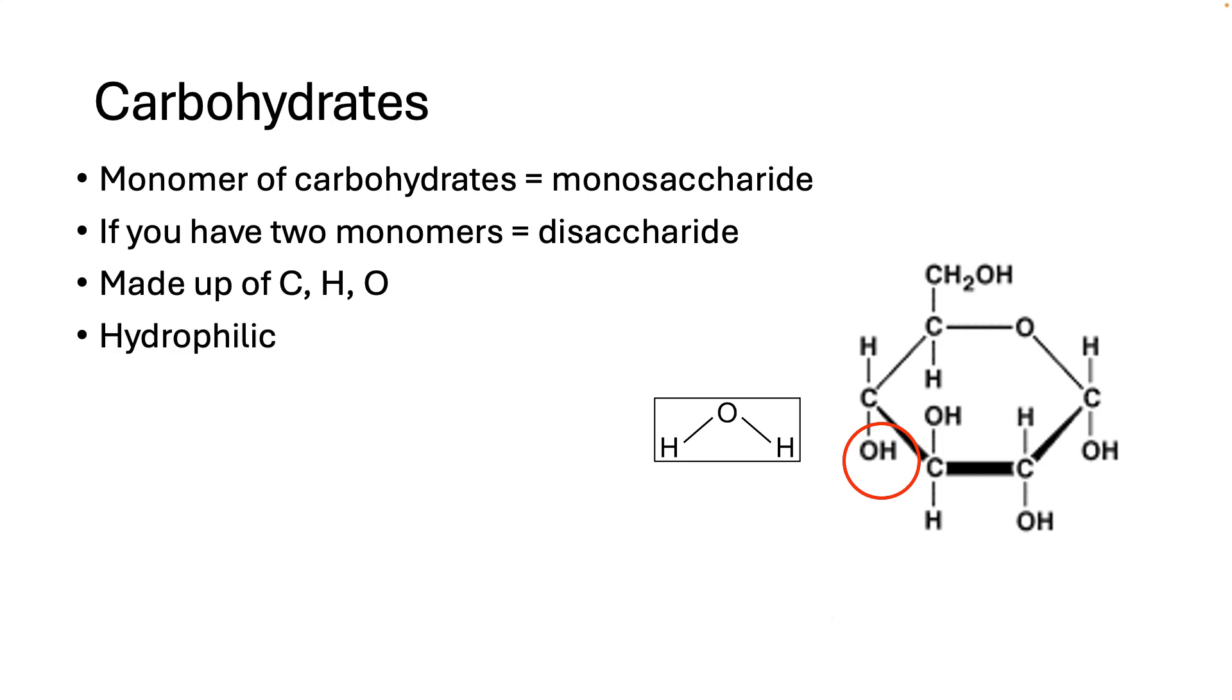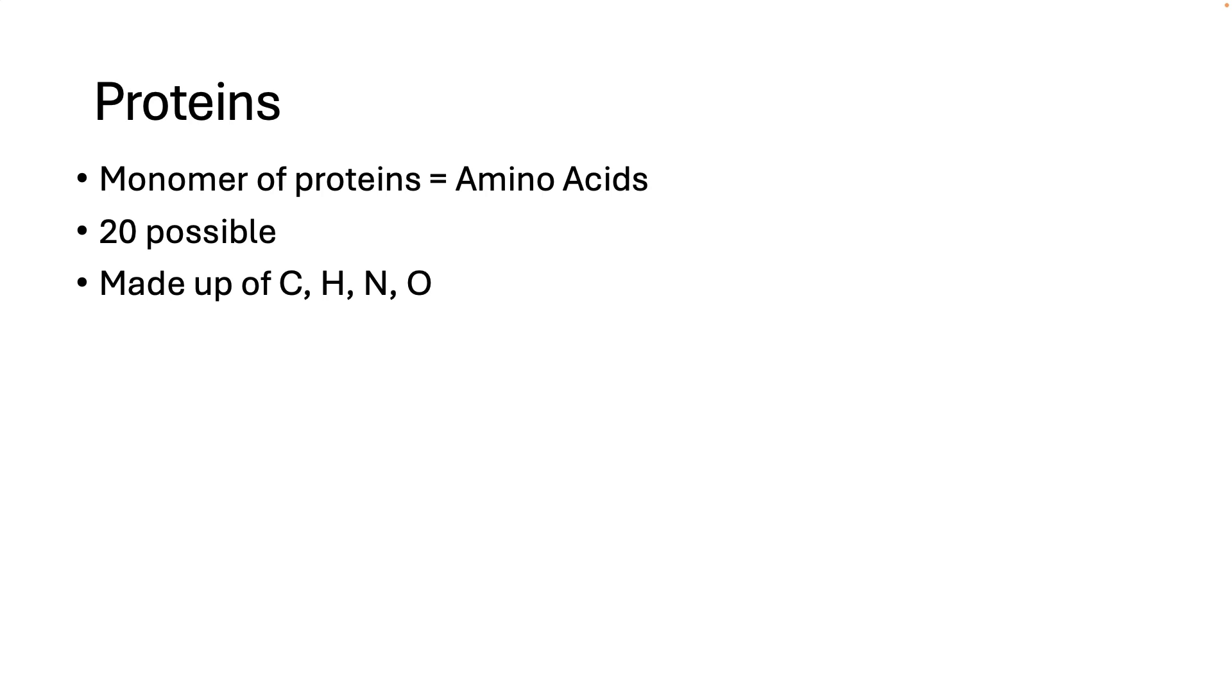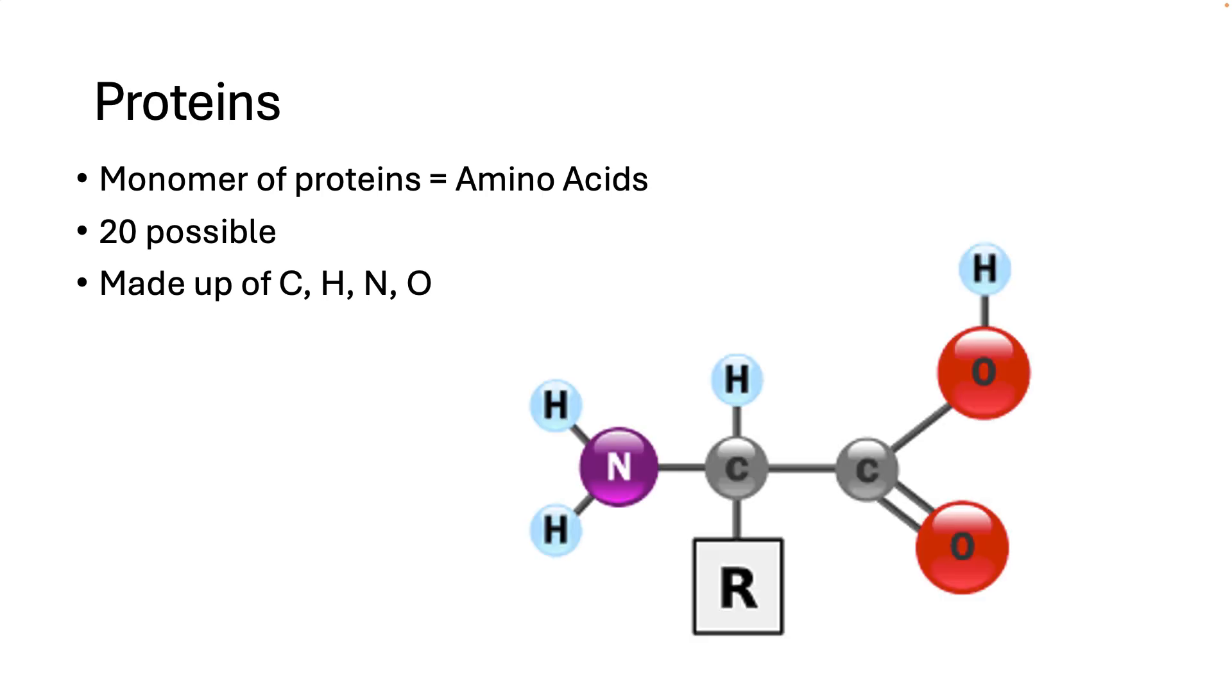Let's talk about proteins next. Proteins are important in the body because enzymes are primarily made of proteins and enzymes are the catalysts that get reactions done in the body. Our muscles are also mostly made up of protein. The monomer of proteins is amino acids.